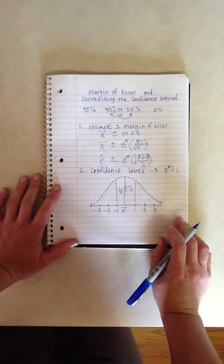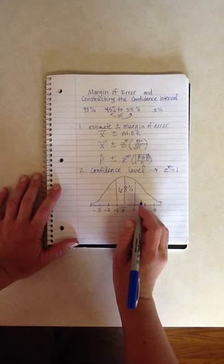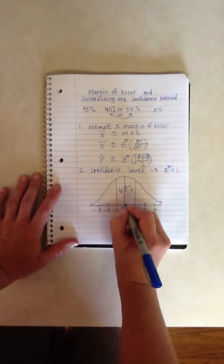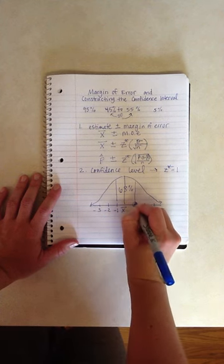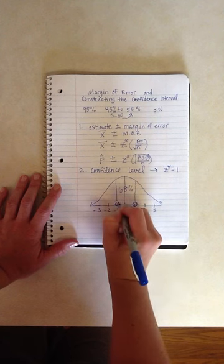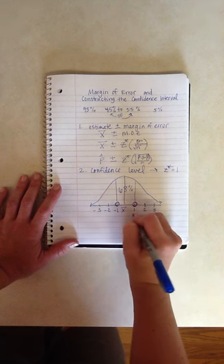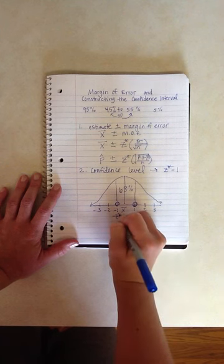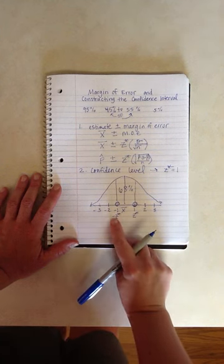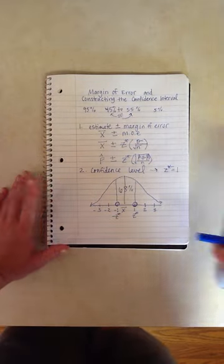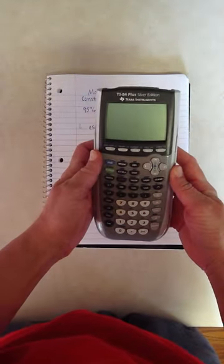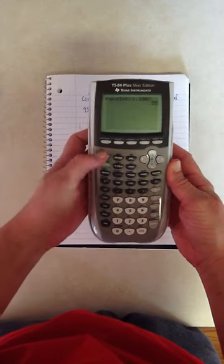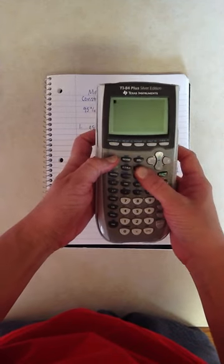Now you might be saying, well, how do I know that? Well, I can show you on your curve. So from the middle, I can use my calculator to figure out what this number and this number will be. This will be called a Z star, and this should be that same value, but a negative. So when you use your calculator, you can find out what this critical value would be. And the function you would use is called inverse norm.